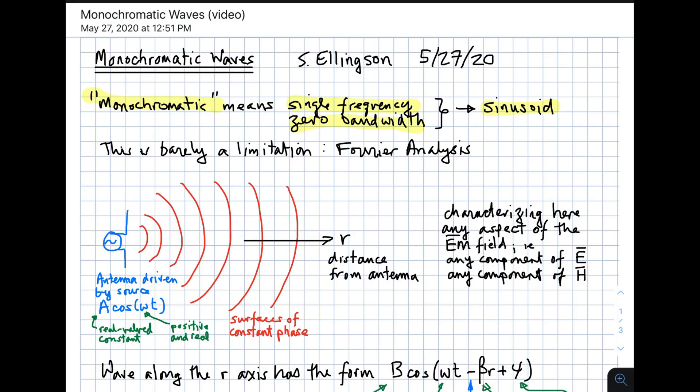Even though we're restricting our attention to sinusoids, you should note that this is barely a limitation. The reason is Fourier analysis. Fourier analysis is the process of analyzing arbitrary waveforms as superpositions, that is as sums of sinusoids. So anything we do for a sinusoid we can extend to analysis of broader band signals, arbitrary signals, simply by determining what combinations of sinusoids those more complicated waveforms consist of.